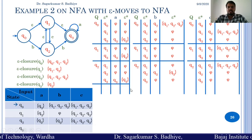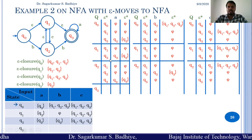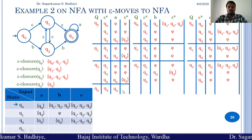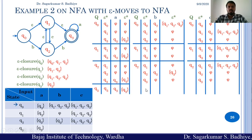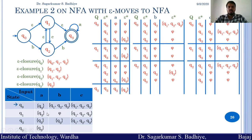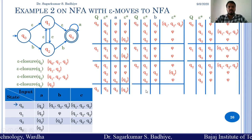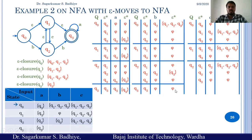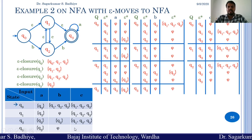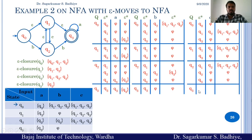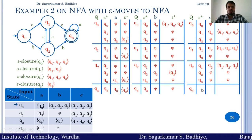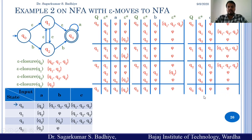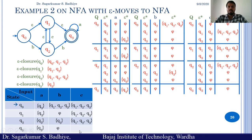Lastly, we find transitions for state Q3. Epsilon closure of Q3 is Q3, and Q3 on A goes to Q3, epsilon closure of Q3 is Q3. So Q3 on A goes to Q3 in the transition table. For Q3 on B: epsilon closure of Q3 is Q3. Q3 on B has no transition — phi. So Q3 on B goes to phi in the equivalent NFA. For Q3 on C: epsilon closure of Q3 is Q3. Q3 on C has no transition — phi. So Q3 on C goes to phi in the equivalent NFA.